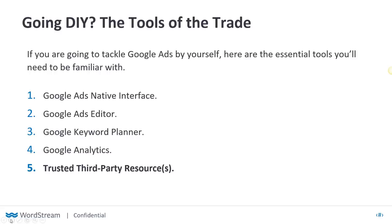Trusted third-party resources can also be very helpful. This could be an outside consultant with a few hours per month to run ideas by and get validation for what you're doing on Google Ads. It could also be a third-party tracking software or CRM system like HubSpot that naturally integrates with Google Ads and provides an easy platform for understanding lead generation and sourcing. Just make sure any third-party tool you attach to paid search has an integration with Google Ads — that's a key aspect of any tool you might use.